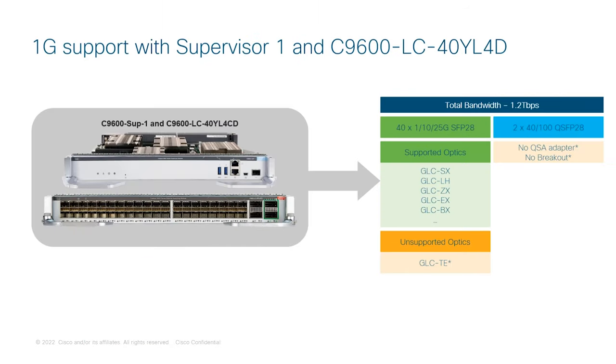This release also introduces 1 gig speed support on the Gen 2 Catalyst 9600 line cards when they are deployed with the Catalyst 9600 Super 1.